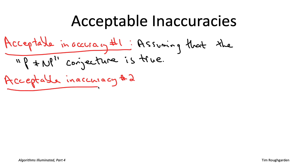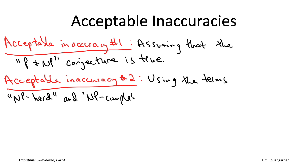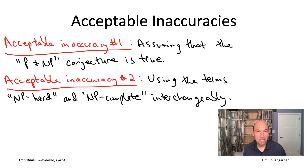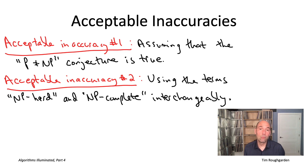The second socially acceptable inaccuracy is to treat NP-hard and NP-complete as synonyms when really they're not. NP-complete is a specific form of being NP-hard; the details are technical and covered in the optional videos. From an algorithmic standpoint, it really doesn't matter whether a problem is NP-complete or NP-hard — the takeaway is the same. Assuming P≠NP, there is no polynomial-time algorithm that solves it, and you'll have to make the same types of compromises either way.